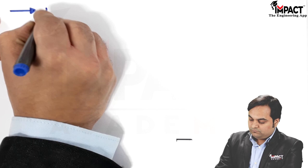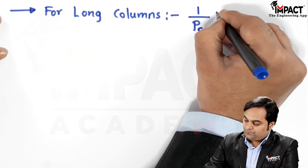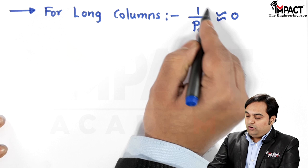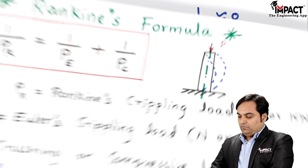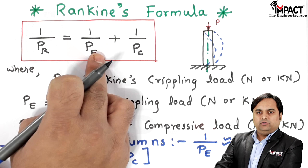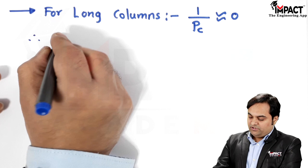Similarly, for long columns, the reciprocal 1/P_c is almost equal to zero because the compressive load P_c for long columns is very large, making its reciprocal negligible. Therefore, 1/P_r equals 1/P_e, which means Rankine's load equals Euler's crippling load for long columns.